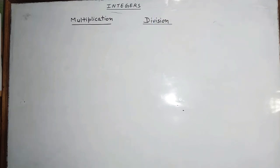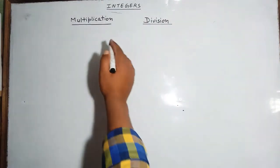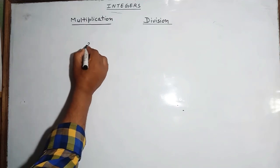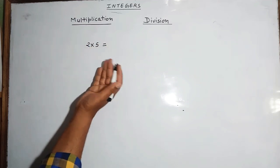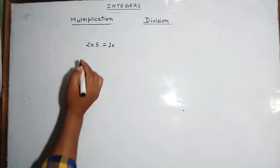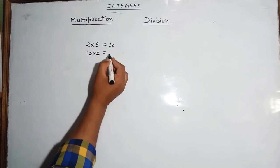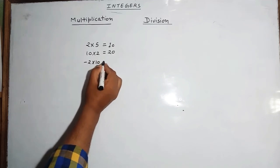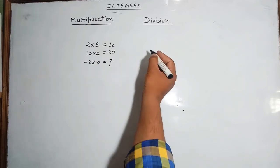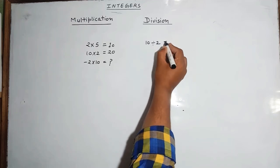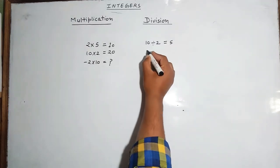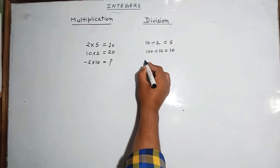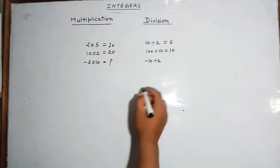Hello students, in this video we are going to learn about multiplication and division of integers. In normal multiplication, 2 into 5 gives 10, and 10 into 2 gives 20. But what if we write minus 2 into 10? Similarly, 10 divided by 2 gives 5, and 100 divided by 10 gives 10. But what if minus 10 is divided by 2? This we will learn in this video.